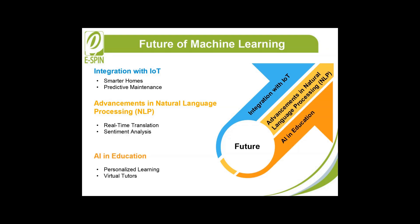AI in education is expected to play a critical role in transforming learning. Personalized learning will tailor educational content and pacing to each student's unique needs and learning styles, improving engagement and outcomes. Virtual tutors and intelligent tutor systems will provide students with on-demand assistance, simulating one-on-one learning experiences.